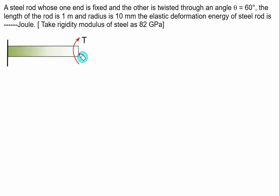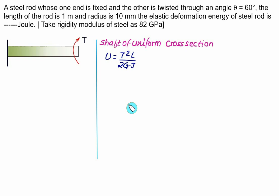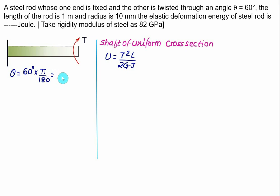A steel rod whose one end is fixed and the other end is twisted through an angle θ equal to 60 degrees. The length of the rod is given as 1 meter, radius equal to 10 mm. The elastic deformation energy (strain energy) is to be found, and the value of G is given as 82 GPa. Again, we need to calculate the torque first. Since we have a uniform cross section, strain energy = T²L / (2GJ). The angle θ must always be in radians; since θ = 60°, convert by multiplying by π/180, giving θ = π/3 radians. Length = 1 m.